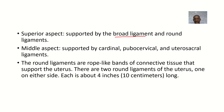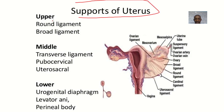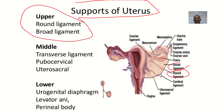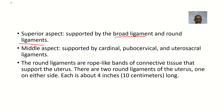This here is the broad ligament, and this is the round ligament. That's the information for the superior, or upper, aspect. Moving to the middle aspect, it is supported by the cardinal ligament, the pubocervical ligament, and the uterosacral ligament.